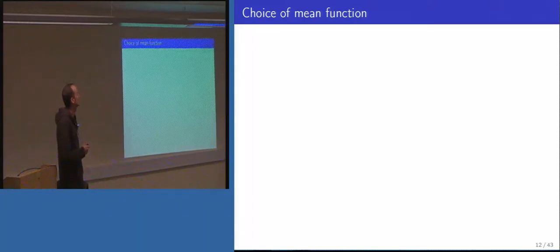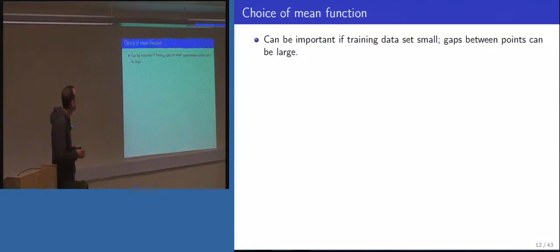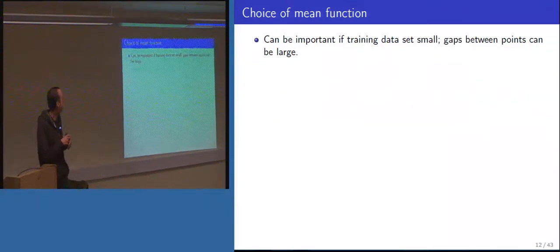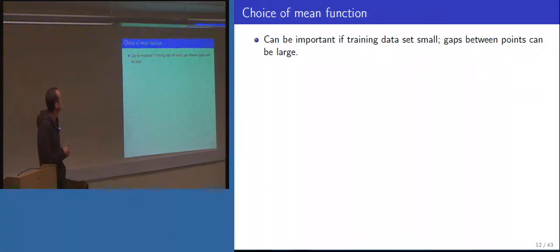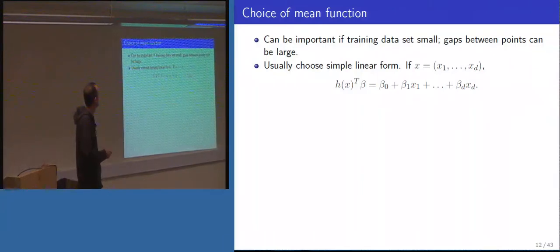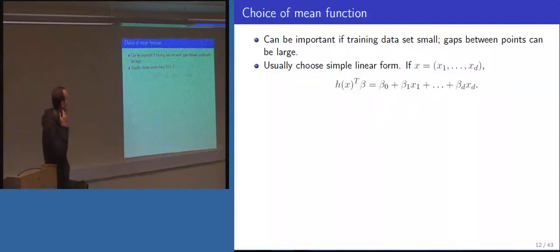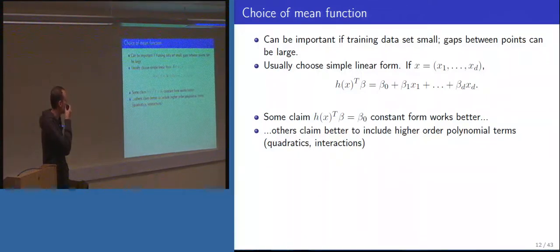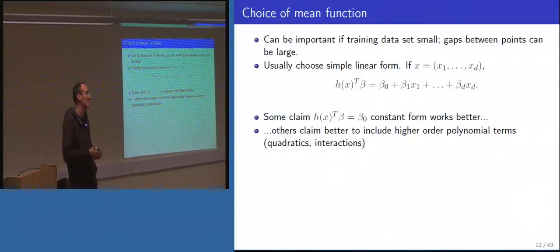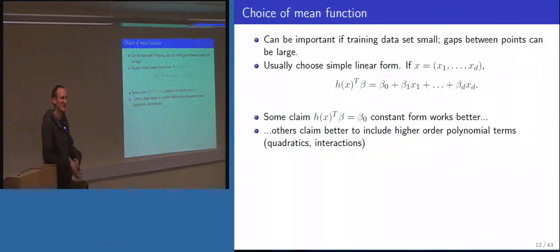On the choice of mean function — or equivalently choice of covariance kernel — when working with quite small training data sets you can have large gaps between points, and relying on the residual Gaussian process alone can be a stretch. The mean function helps interpolate in gaps far from training data. In practice I usually stick to a fairly simple linear form, though opinions vary. Some say it adds unnecessary parameters and a simple constant is better; others go to the extreme of high-order polynomial terms — I suspect they secretly dislike Gaussian processes.